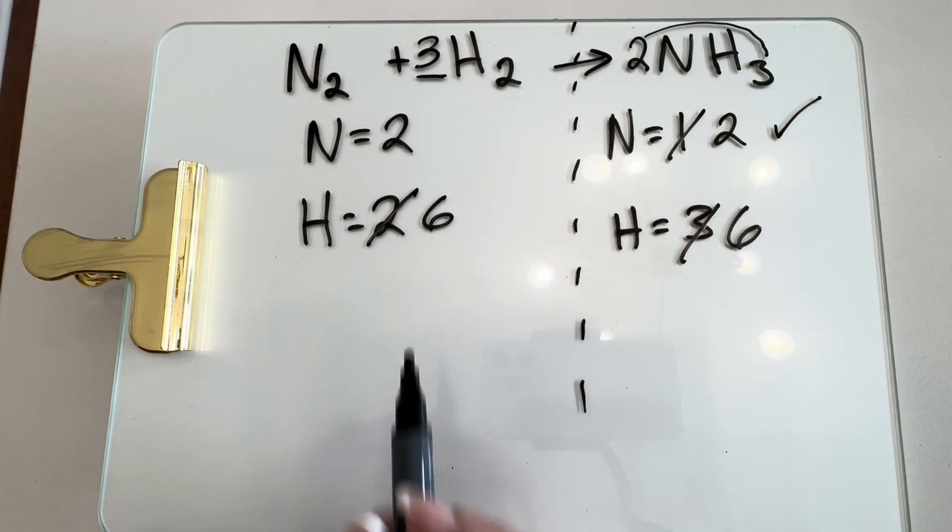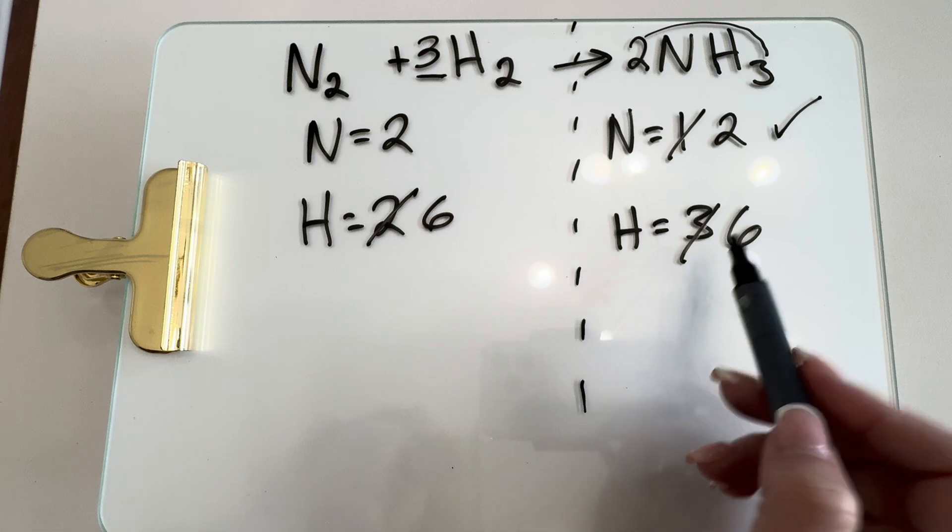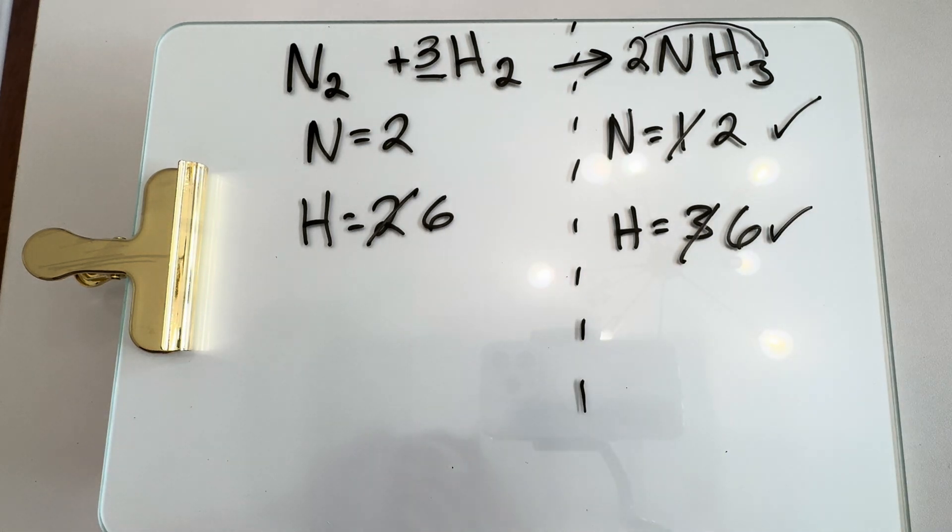Now we have two nitrogen and six hydrogen on both sides, and we are balanced.